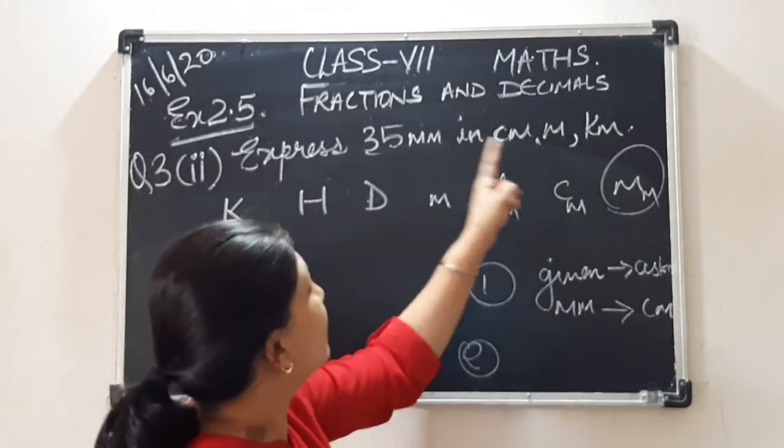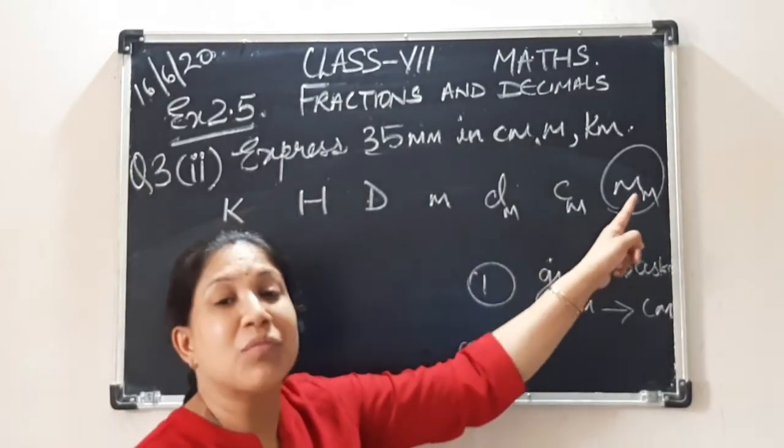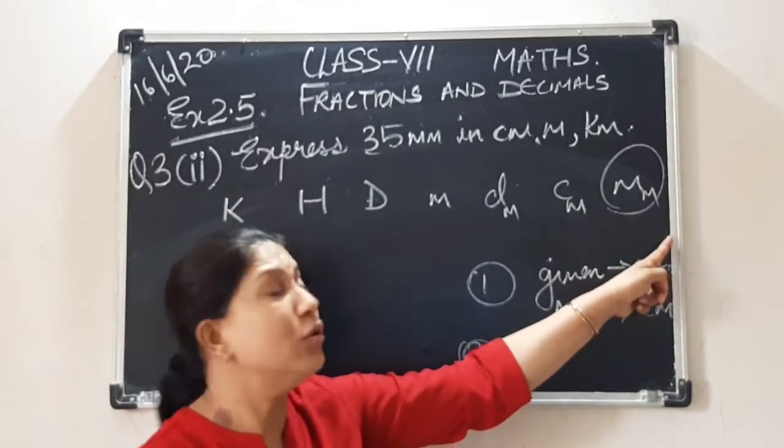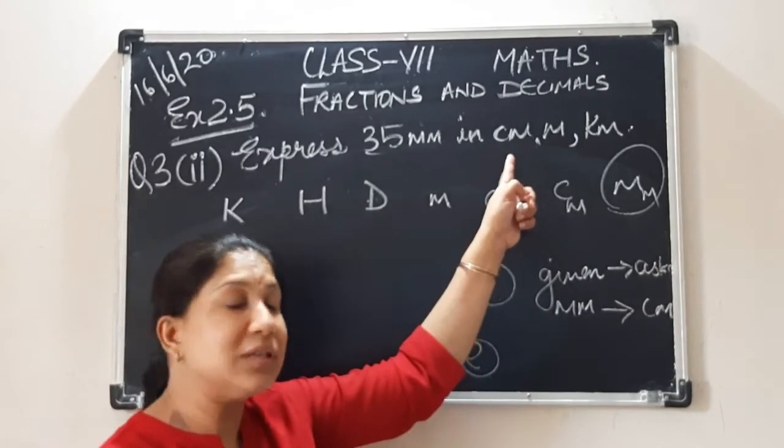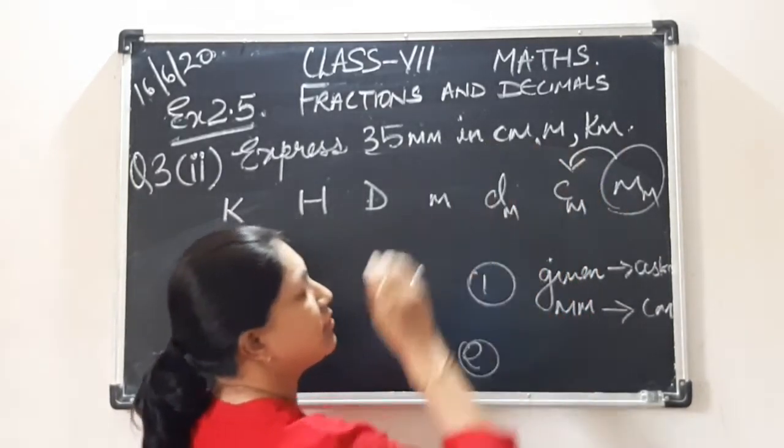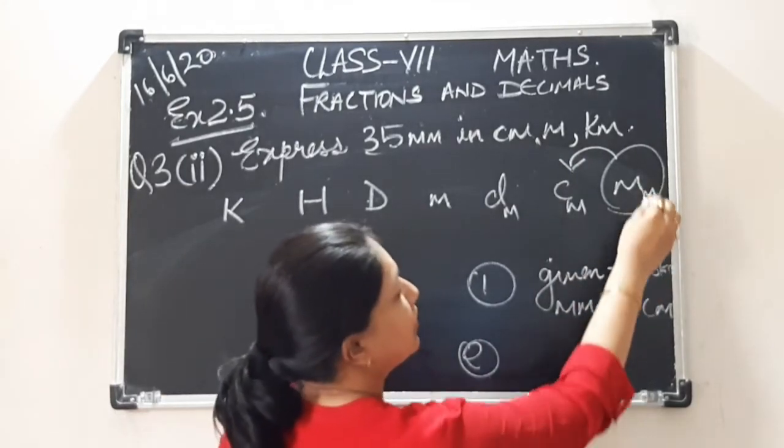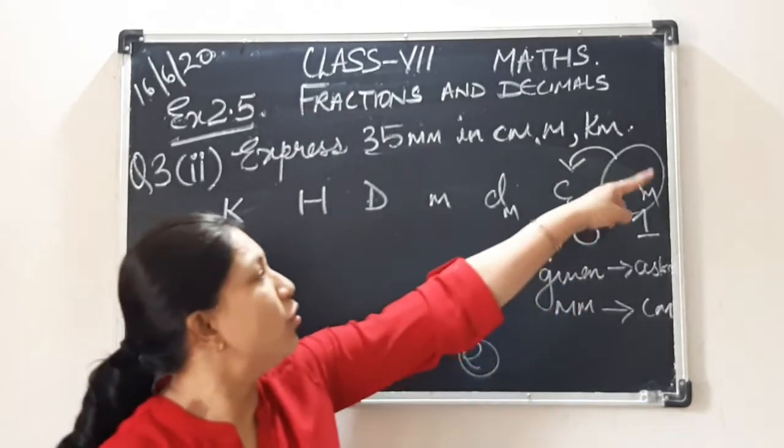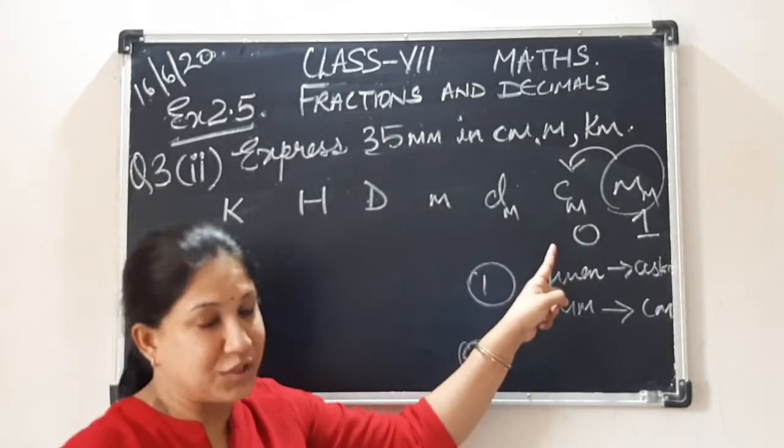We are at millimeter. We want to locate centimeters. Find out where is centimeter? Here. So starting the journey from millimeter, we have reached centimeter. Only one jump. One jump.